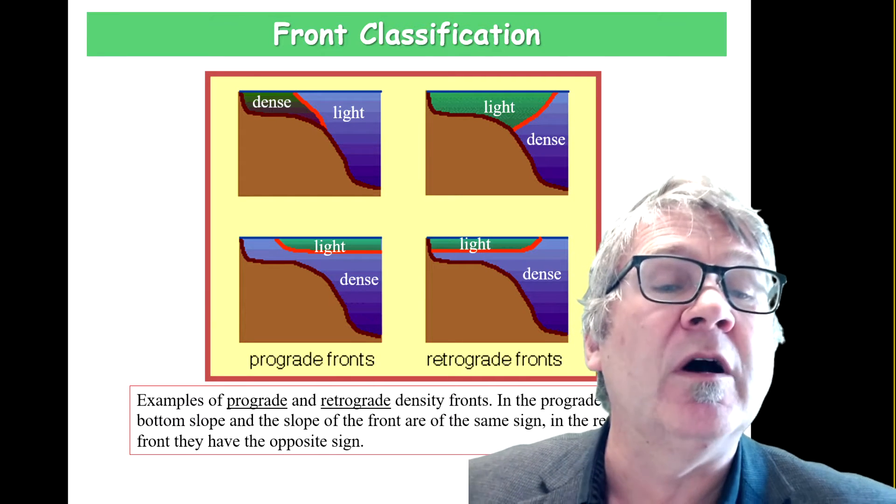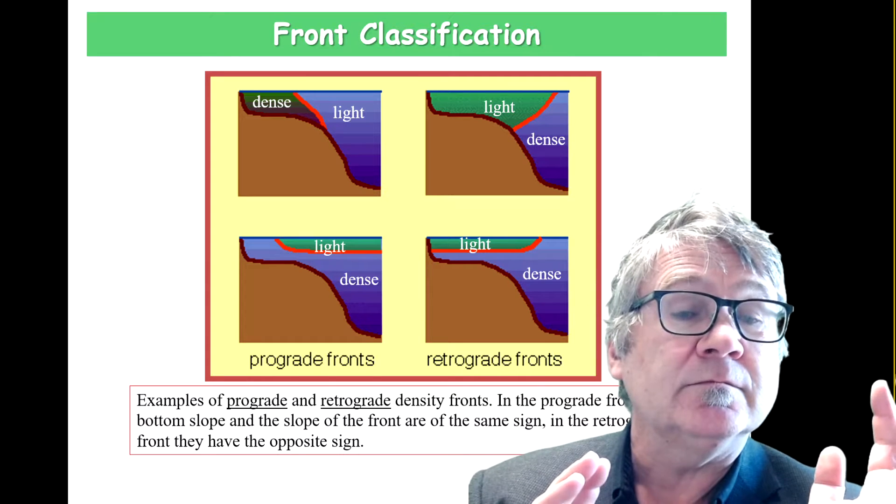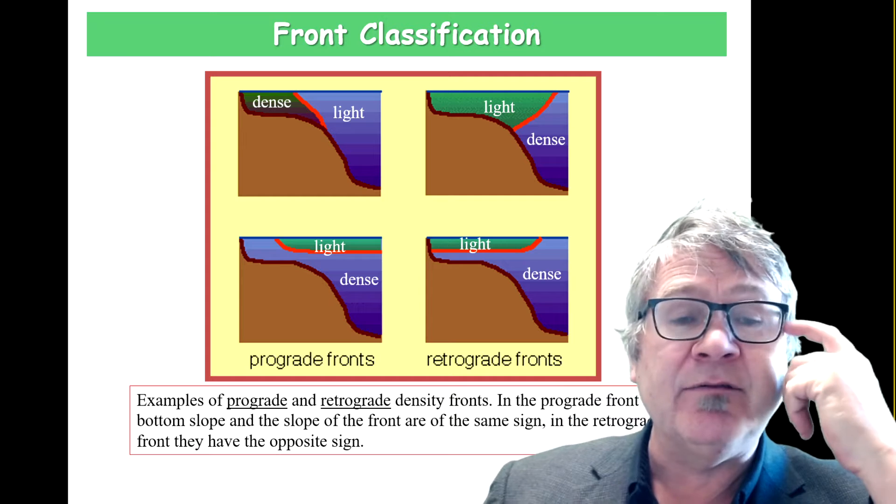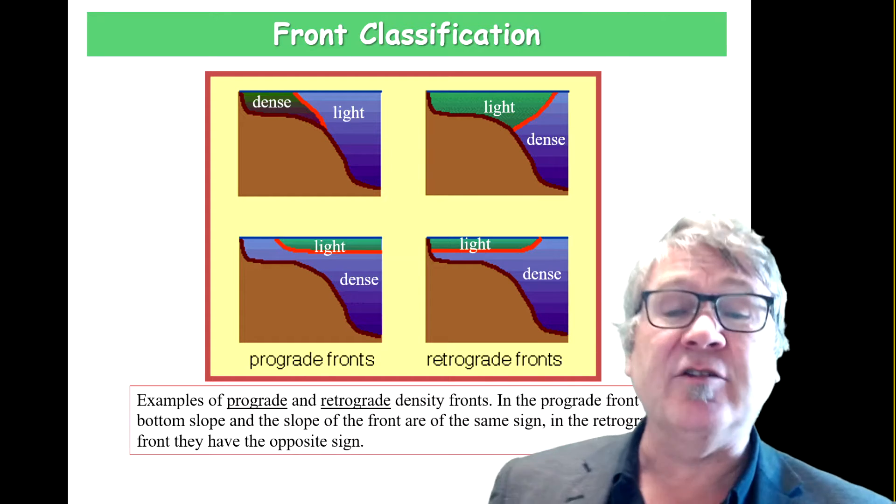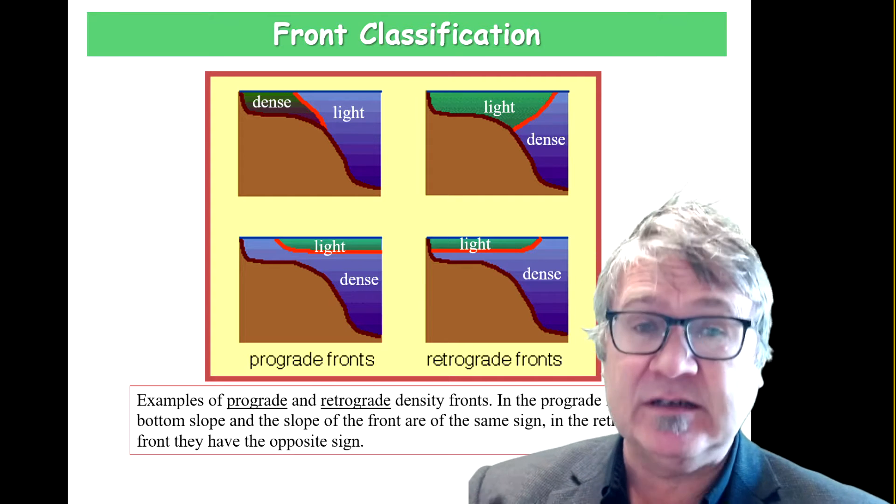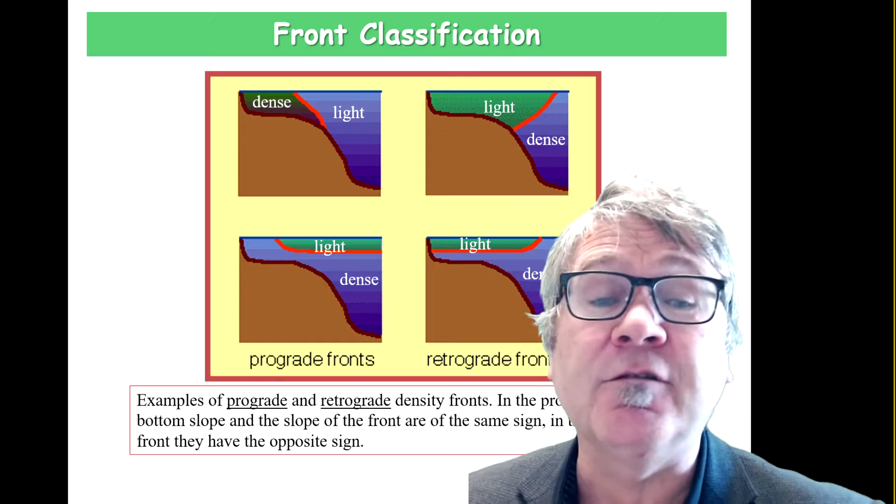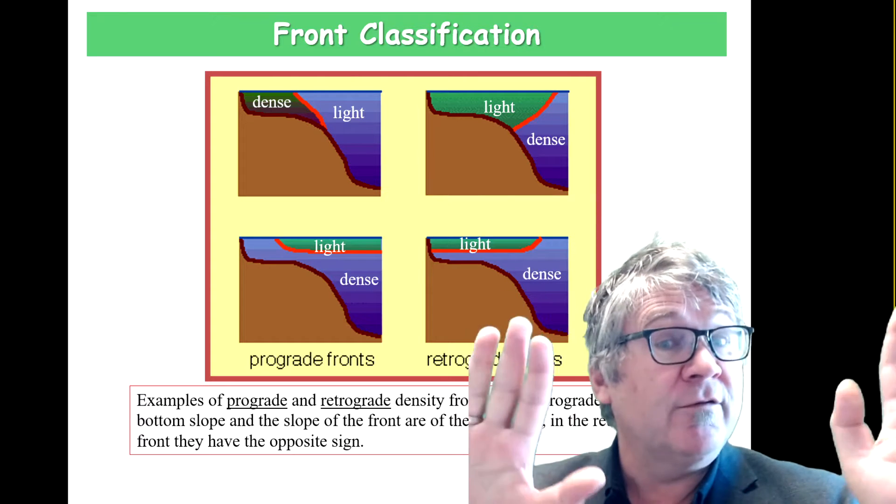Retrograde fronts are ones where the slopes are opposite. You can easily see that if you compare the slopes of the red curves, which is the shape of the front, and the brown curves characterize the shape of the seafloor. You look from the side here.